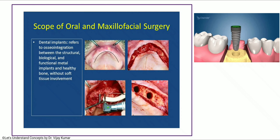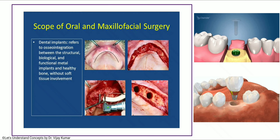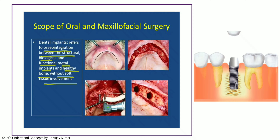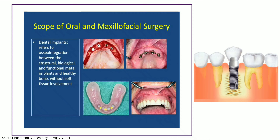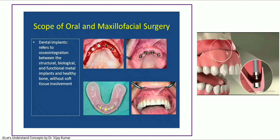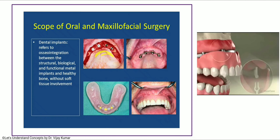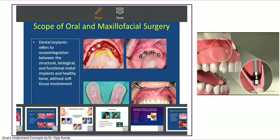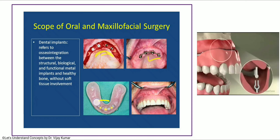Implantology is also within the scope of OMFS. Implant refers to osseointegration between the structural, biological, and functional metal implant with healthy bone, without soft tissue involvement. In an implant-supported complete denture, four implants in the maxilla are splinted with a bar, and the implant-supported complete denture settles over those implants.